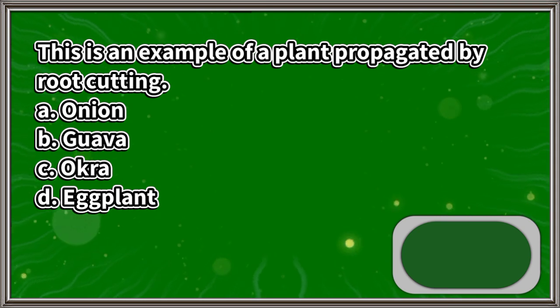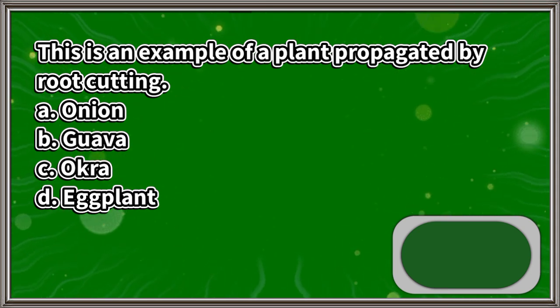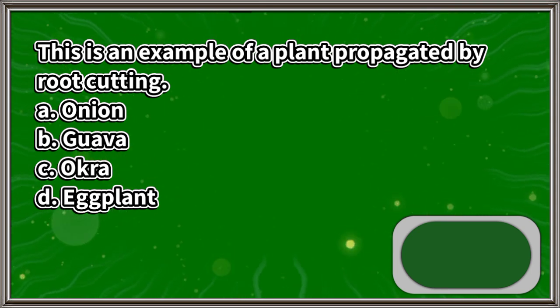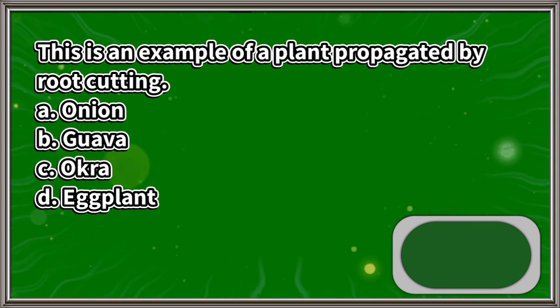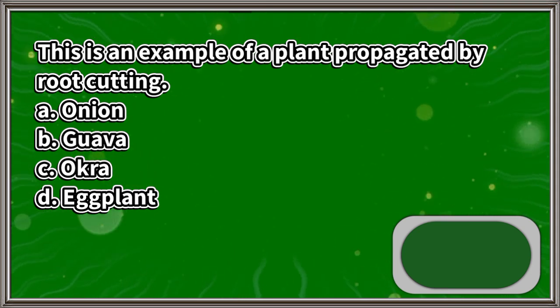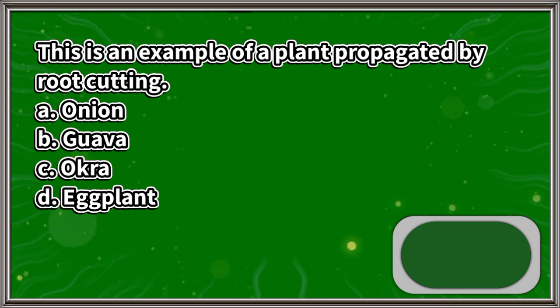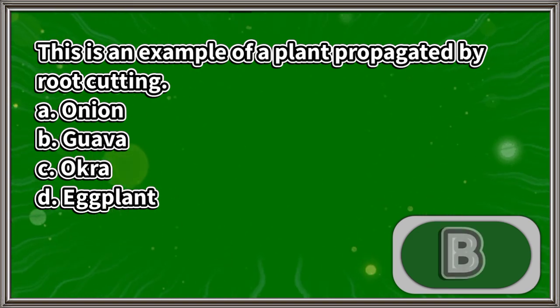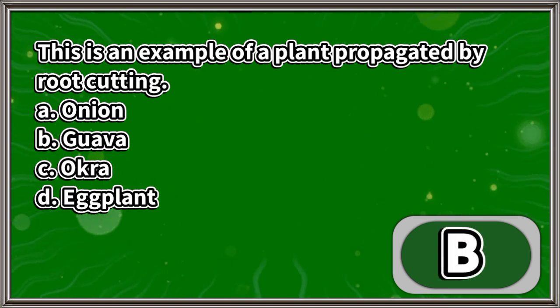This is an example of a plant propagated by root cutting: A. Onion, B. Guava, C. Okra, D. Eggplant. The answer is letter B.